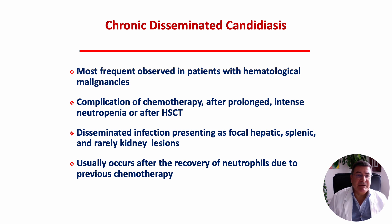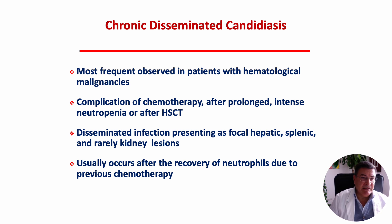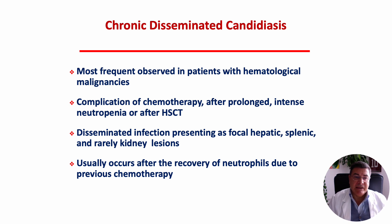Chronic disseminated candidiasis is frequently observed in patients with hematological malignancy after chemotherapy, so after a prolonged intense neutropenia, or in patients that underwent a hematopoietic stem cell transplantation. Usually the disseminated infection is characterized by focal localization to the liver, spleen, and rarely to the kidney.